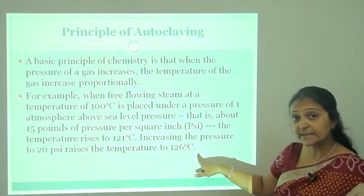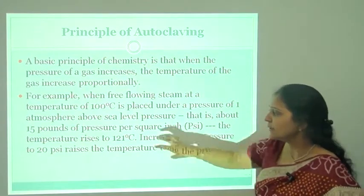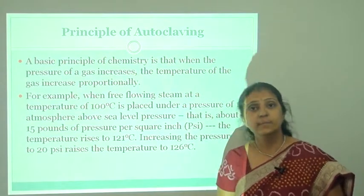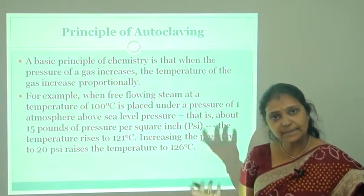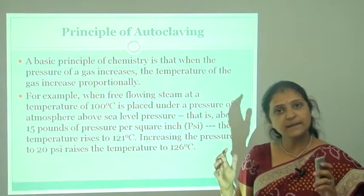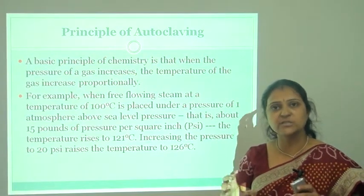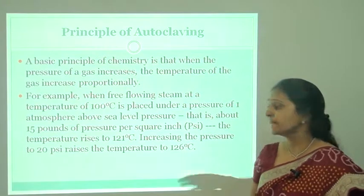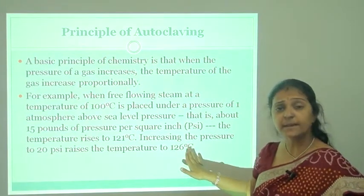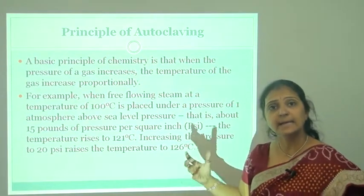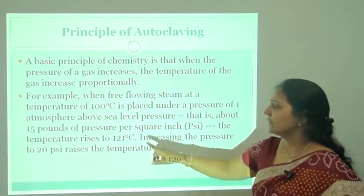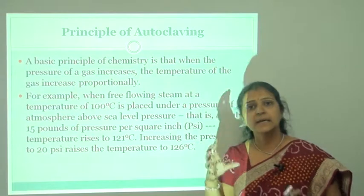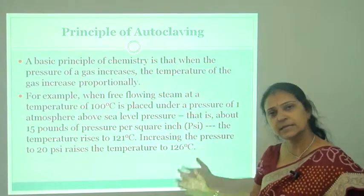Increasing the pressure up to 20 psi raises the temperature to 126°C. But why do we use only 121°C at 15 LB pressure? Because if we sterilize media in the autoclave, the medium composition or constituents should not be denatured. At higher temperatures, the media can be denatured. So 121°C, 15 LB pressure, and 15 minutes is fixed for sterilization of culture media.